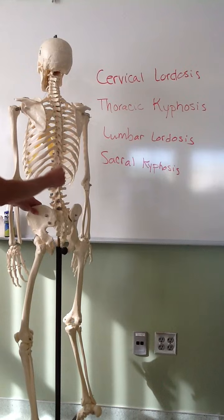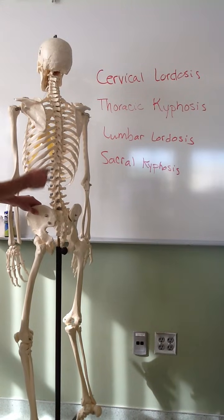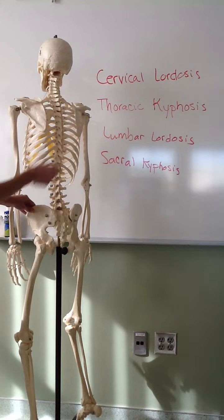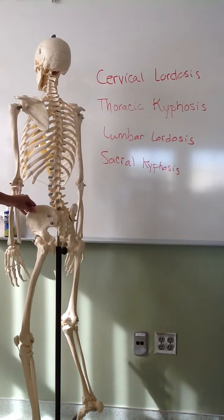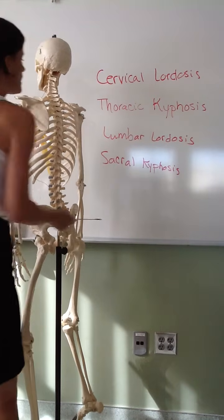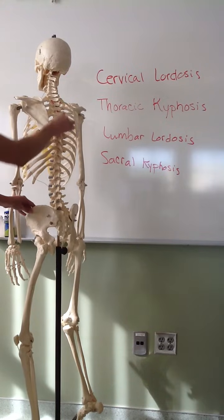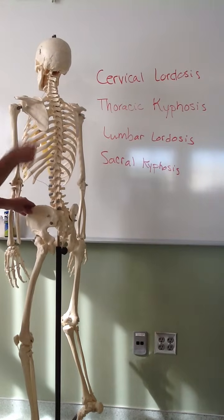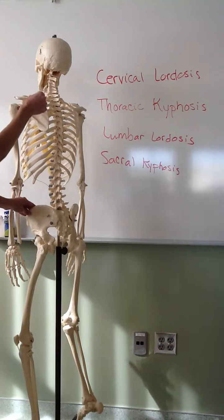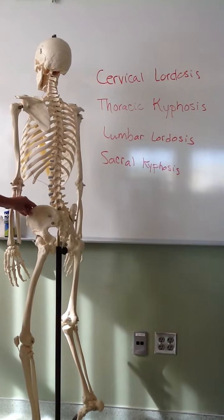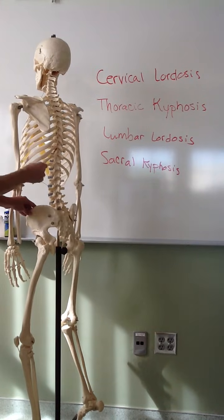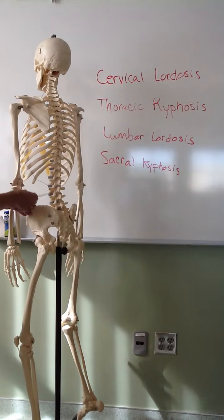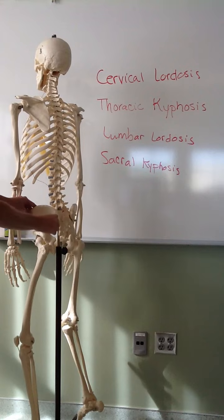When we look at the spine as a whole, we see that it's a curved structure with 4 different curves — 2 that are concave curves that cave inward, which we call lordosis, and 2 curves that are convex curves that flex outward, which we call kyphosis. Up top, we have a cervical lordosis where the spine curves inward. Next, we have a thoracic kyphosis where the thoracic vertebrae curve outward. Then the lumbar lordosis, and finally the sacral kyphosis.